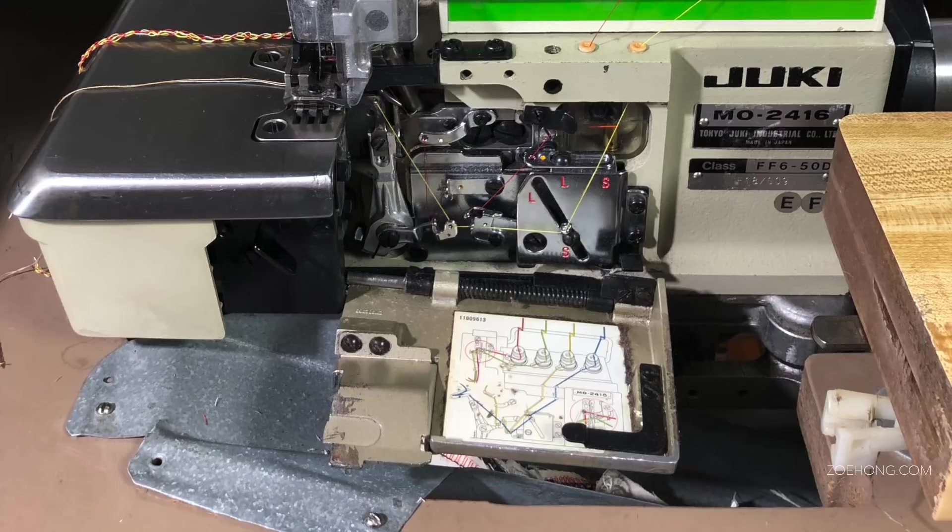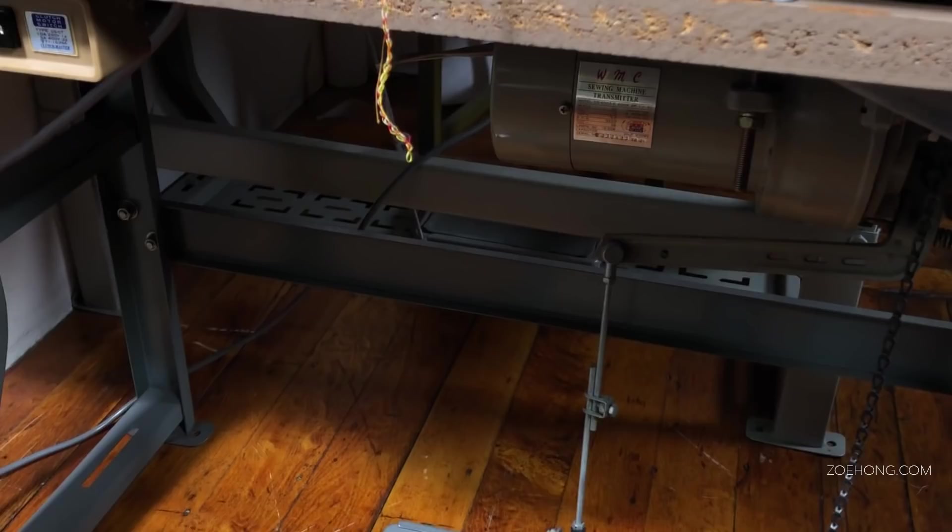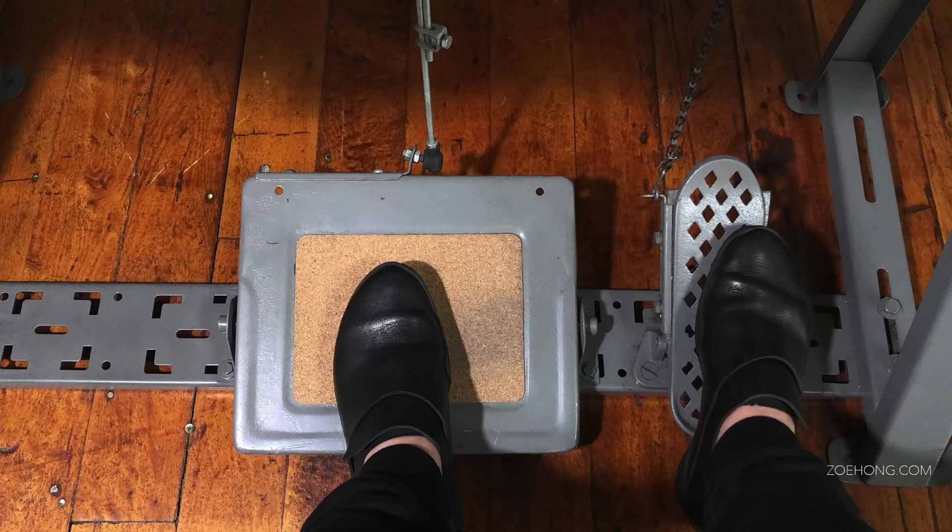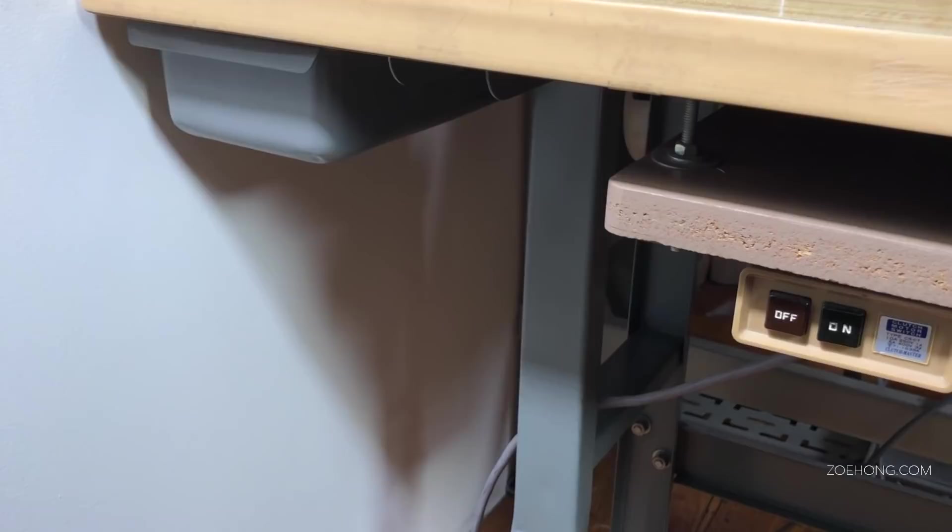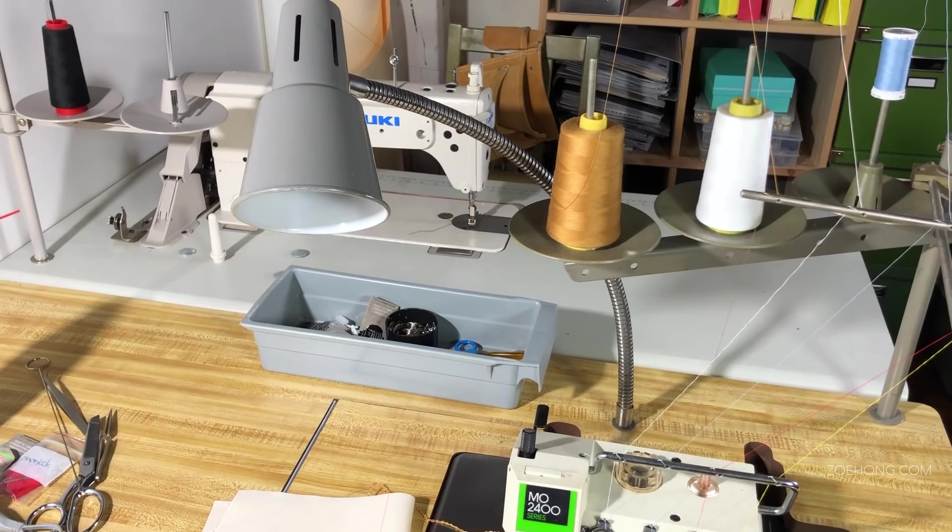That being said, this Juki MO-2400 is probably older than me and it still works beautifully. Industrials can do that. They can last forever if you take care of them. Like most other industrials, they come set into the table. The motor is down here. There's your power button. There's a little drawer right there for your tools. Here are your pedals. The one on the left is the one that makes it sew. The one on the right raises the sewing foot. This sewing machine came with the lamp installed and it'll turn on when I turn the machine on, but you got to get your own chair.